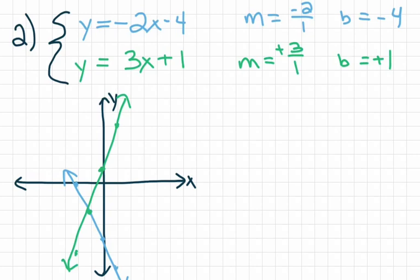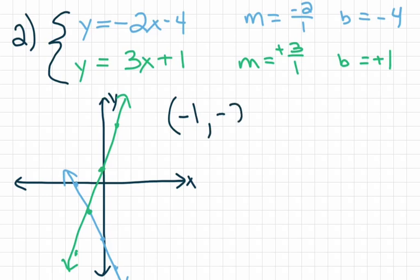Now I want to identify the point where the lines intersect. Those lines intersect right here, and that point is my solution. My solution to this system of equations is the ordered pair negative 1, negative 2. I'm simply looking for the point where the lines intersect.